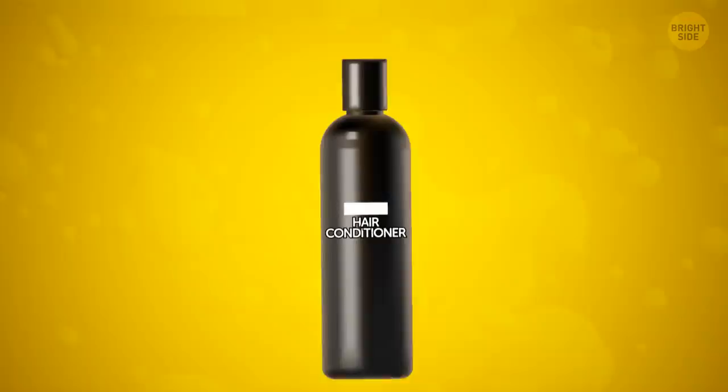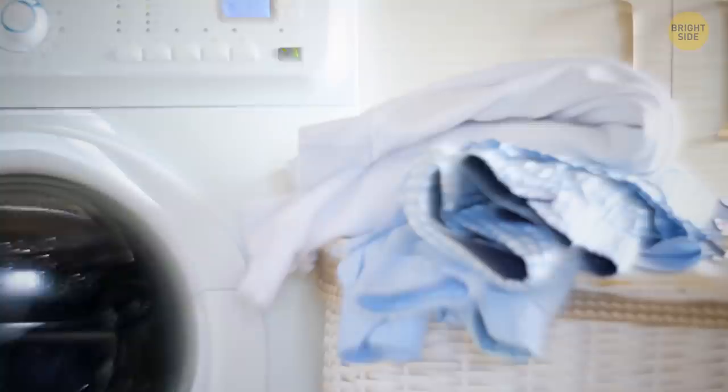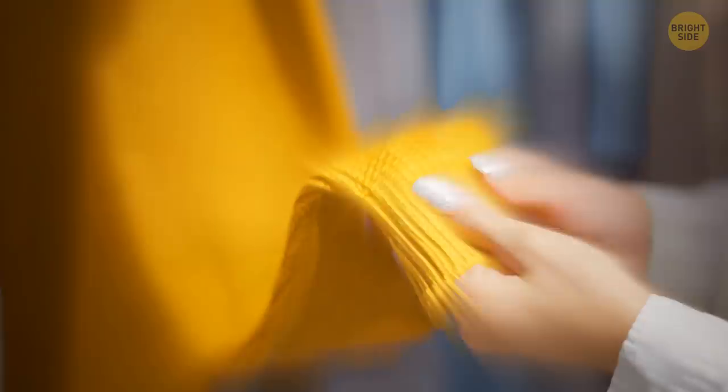You can use hair conditioner to make that new wool sweater less itchy. Just soak it in lukewarm water with a couple of tablespoons of conditioner and leave it for 15 minutes. Then just dry it, and your sweater will be much softer.